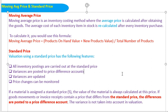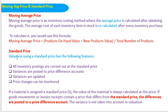Standard price is generally used for finished and semi-finished products for valuation. If you are using standard price, there will be a price difference at the time of goods receipt — this goes to the price difference account. For example, if the purchase order value is 100 rupees but you have maintained 110 rupees in the material master, the difference amount goes to the price difference account. All inventory postings are carried out at the standard price; variances are posted to the price difference account and price changes can be monitored.